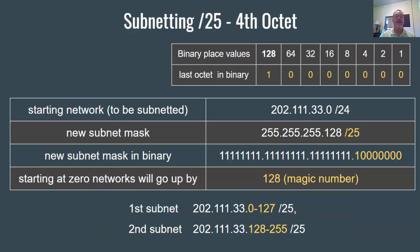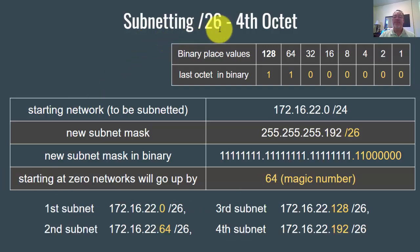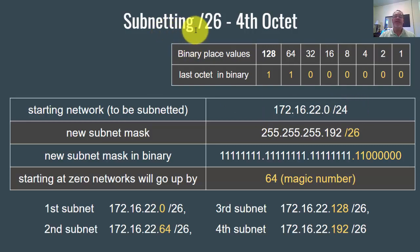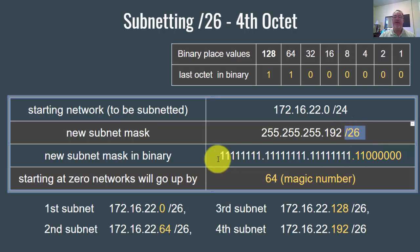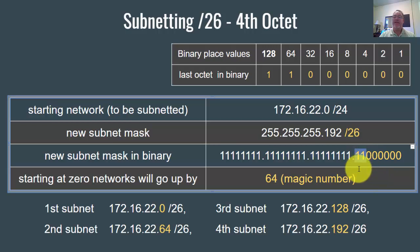Now let's compare this to subnetting on a slash 26 boundary. The starting network is 172.16.22.0 slash 24, and we're going to subnet it by changing slash 24 to slash 26. That means the subnet mask changes from 255.255.255.0 to 255.255.255.192, because we've added two bits into the subnet mask — 26 ones — and those two ones in the last octet are in the 128s place and the 64s place, and 128 plus 64 is 192.